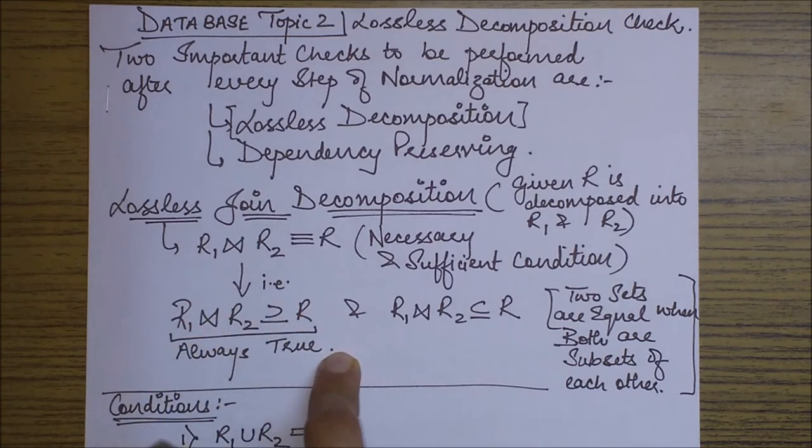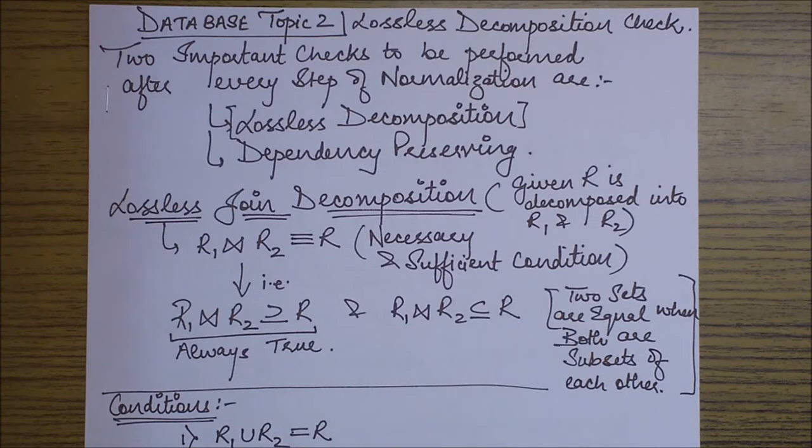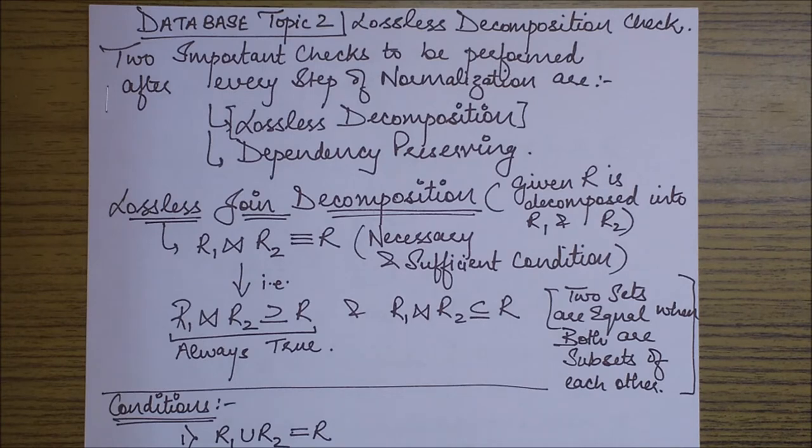And what do we need to check then? That this is always a subset. So what I mean to say is the lossless data does not mean that there is some loss of tuples. It essentially means that there is some loss of some precision or you are getting some extra tuples which is now making your information results false.